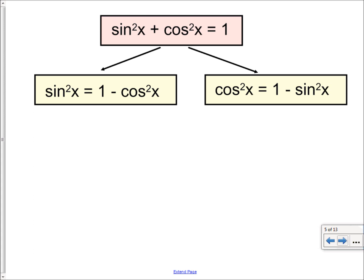That's your second trig identity. You can rearrange it by making sine squared x the subject, giving sine squared x equals one minus cos squared x. Similarly, if cos squared x is the subject, you get cos squared x equals one minus sine squared x. So the parent formula is sine squared x plus cos squared x equals one, and from that you can derive both rearrangements. You need to remember that tan of an angle equals sine over cos, and that sine squared plus cos squared equals one.